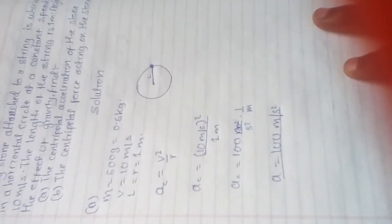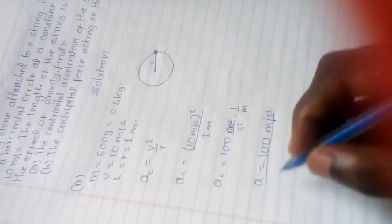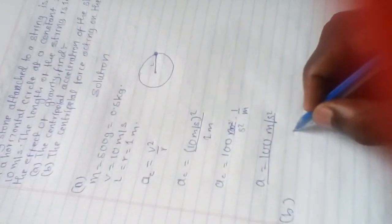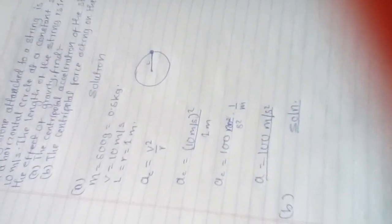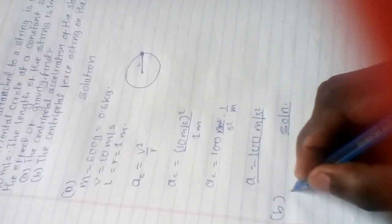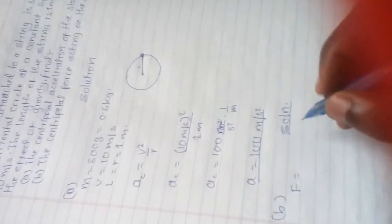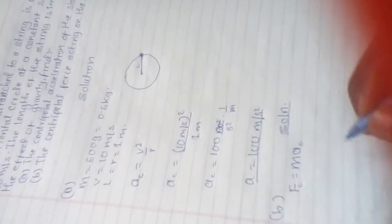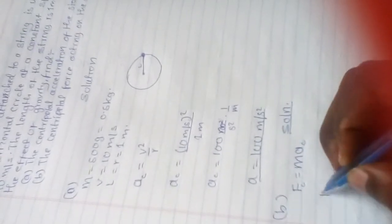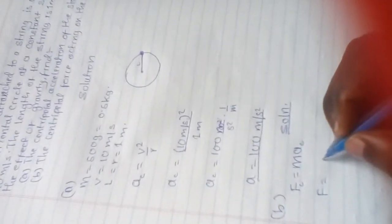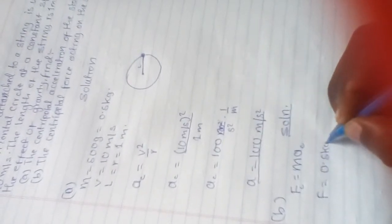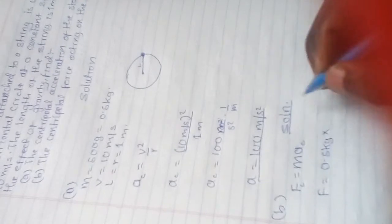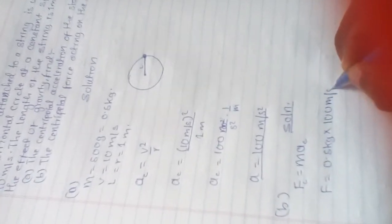For part B, we need to find centripetal force. Centripetal force is mass times centripetal acceleration. So force equals mass, which is 0.5 kilograms, times the centripetal acceleration which we found to be 100 meters per second squared.